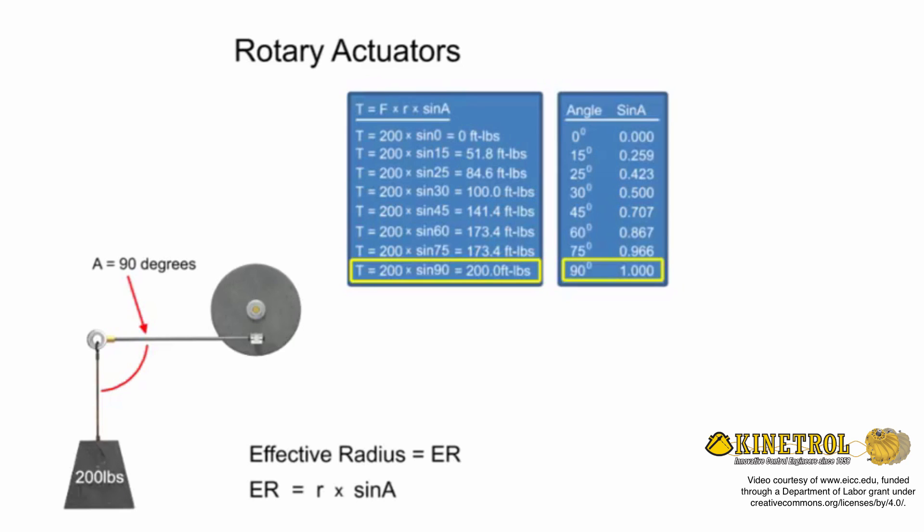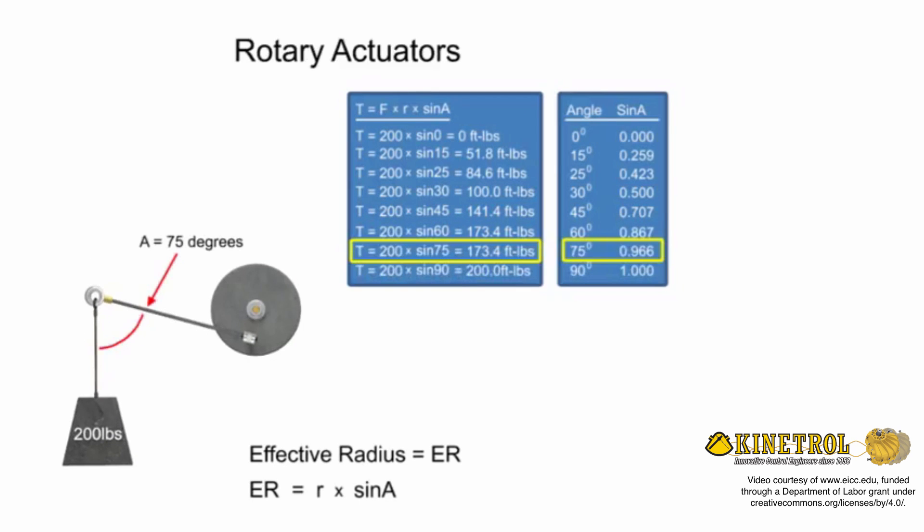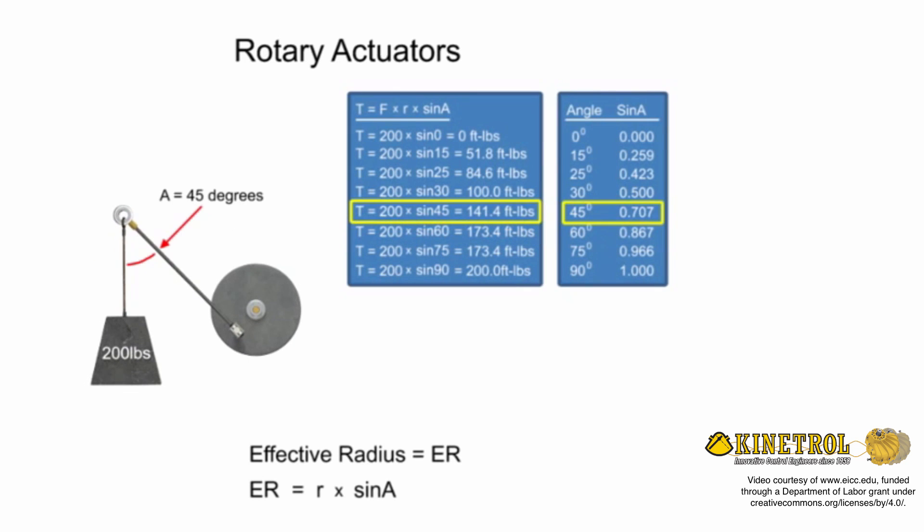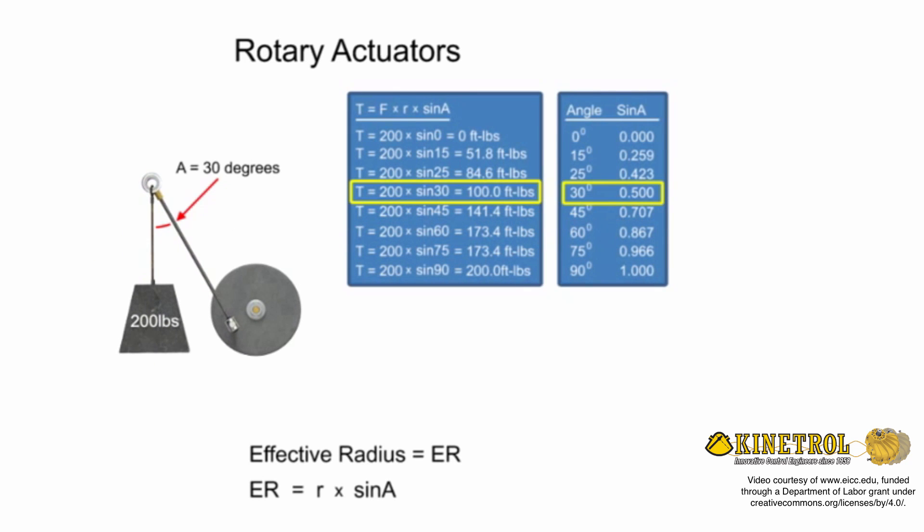The sine of 90 degrees is equal to 1. It is at this angle that the torque is at its maximum value for the system. Understanding the relationship between the output torque required and the physical setup of a fluid system enables designers to determine the appropriate rotary actuator for each unique application.